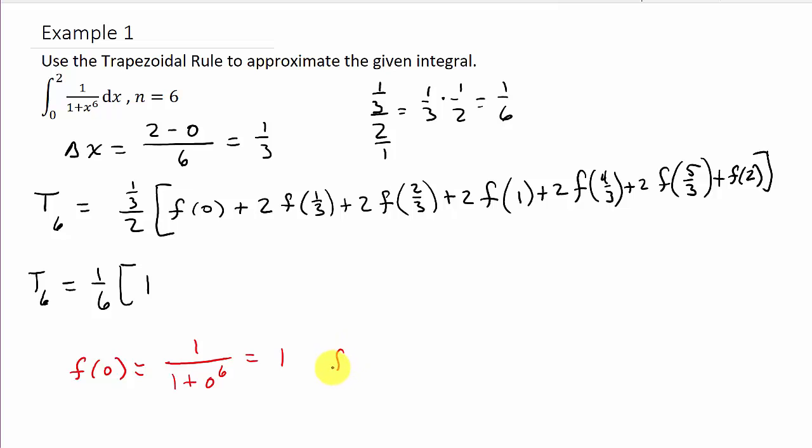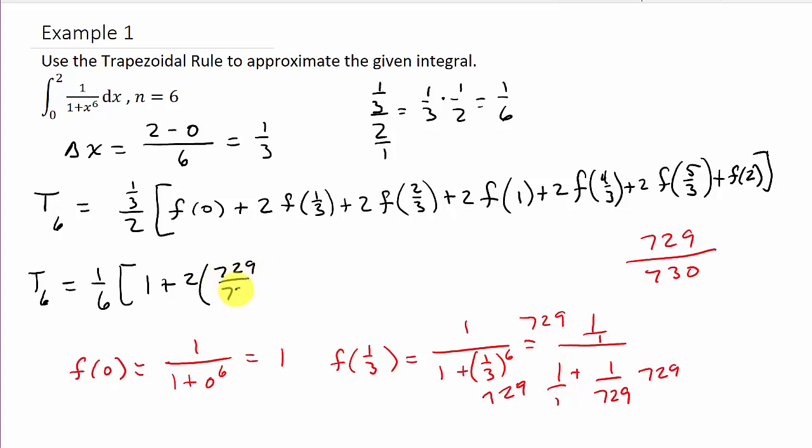And then, the next one, that's going to be f of 1 third, that's going to be 1 over 1 plus 1 third to the sixth. And whatever that is, let's see. So this is going to be 1 over 1 plus 1 over 729. And then, remember how to simplify a complex fraction, multiply everything by 729. And so, that's going to leave us with 729 over, and this is going to be 729. This cancels out to 1, so that's going to be over 730. So, that's plus 2 times 729 over 730.